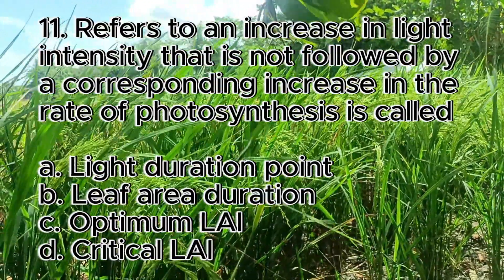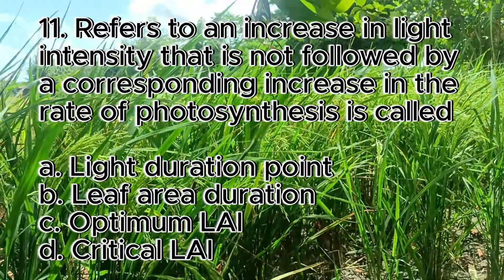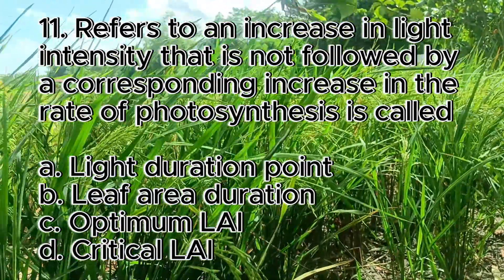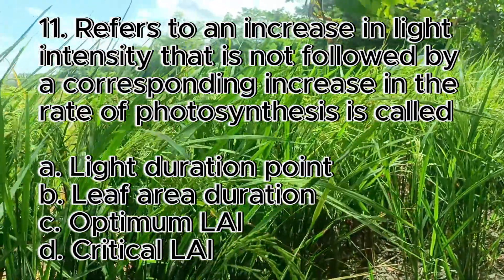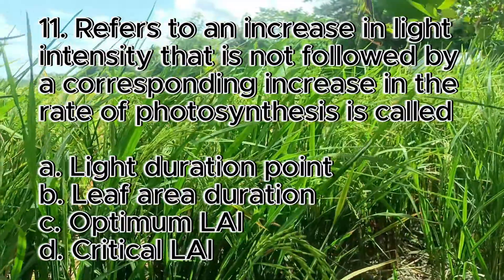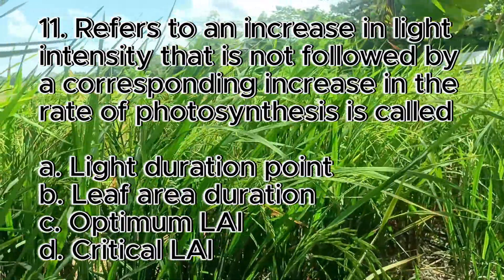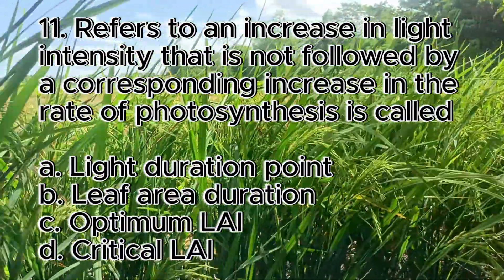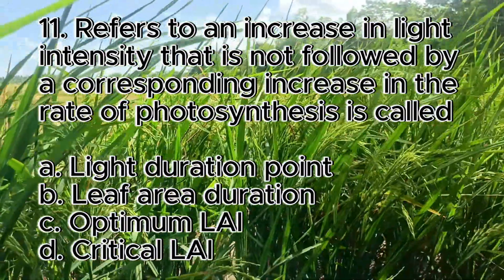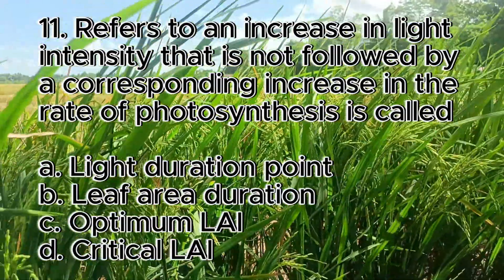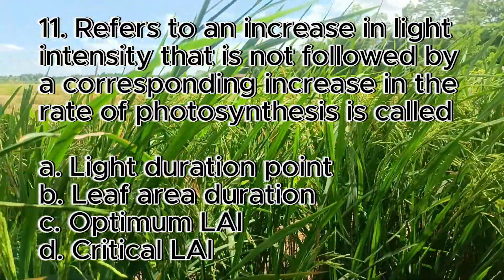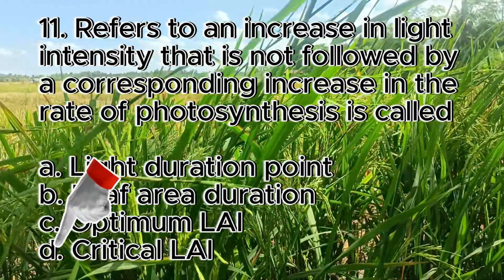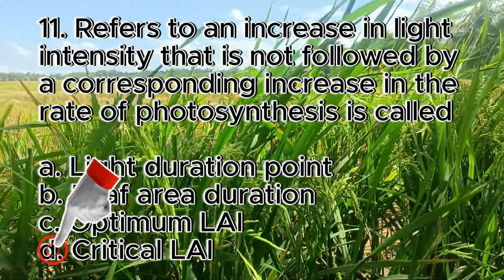Number 11. Refers to an increase in light intensity that is not followed by a corresponding increase in the rate of photosynthesis, is called. A. Light saturation point, B. Leaf area duration, C. Optimum LAI, D. Critical LAI. The answer is letter D, critical LAI.